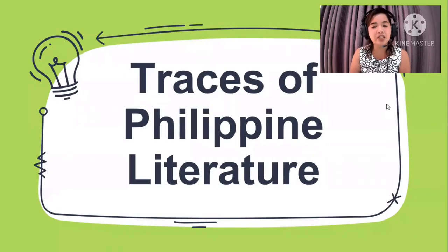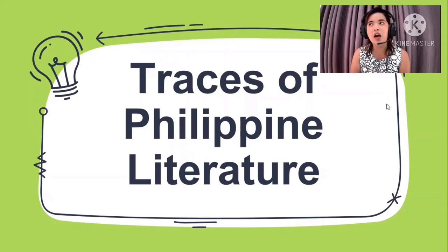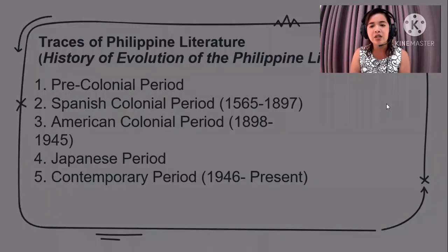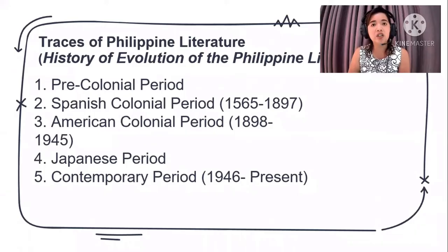Our topic for today is about the traces of Philippine literature — we're going to be going back to the history of Philippine literature, dealing with the types of writing, the style of writing, and also the famous literary works from way back then. The topics we're going to deal with are: first, the pre-colonial period; second, the Spanish colonial period; third, the American colonial period; fourth, the Japanese period; and fifth, the contemporary period.